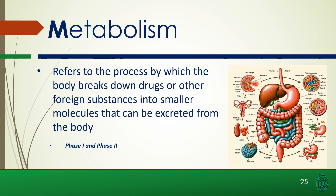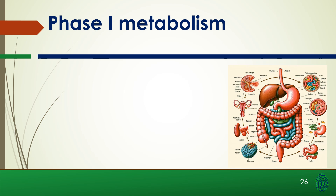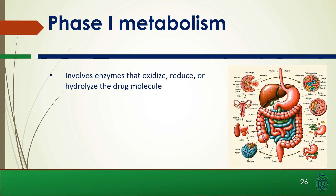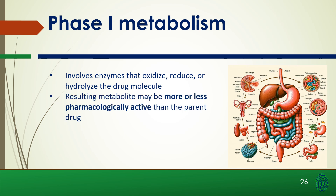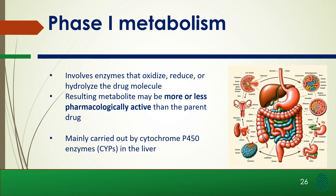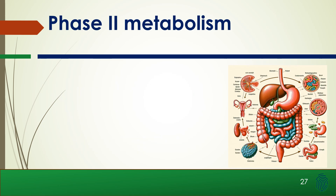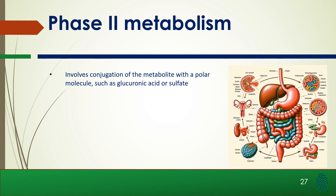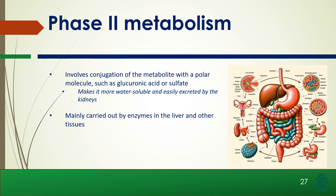Metabolism refers to the process by which the body breaks down drugs or other foreign substances into smaller molecules that can be excreted from the body. Phase 1 metabolism involves enzymes that oxidize, reduce, or hydrolyze the drug molecule — the resulting metabolite may be more or less pharmacologically active than the parent drug. It is mainly carried out by the cytochrome P450 enzymes (CYPs) in the liver. Phase 2 metabolism involves conjugation of the metabolite with a polar molecule such as glucuronic acid or sulfate, making it more water-soluble and easily excreted by the kidneys, and is carried out by enzymes in the liver and other tissues.